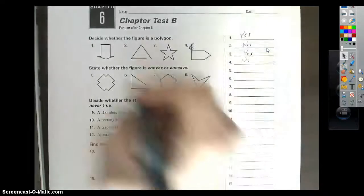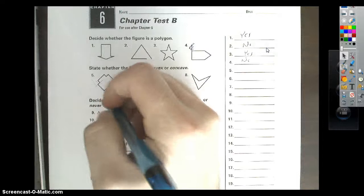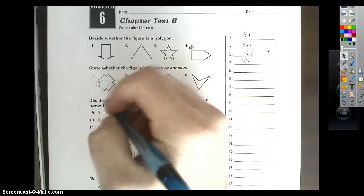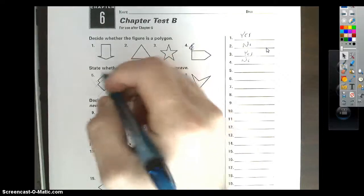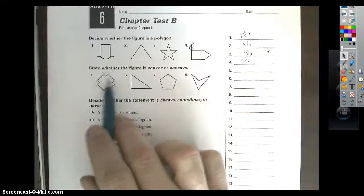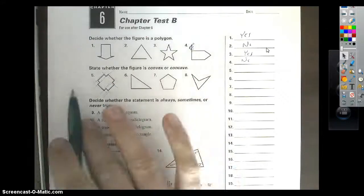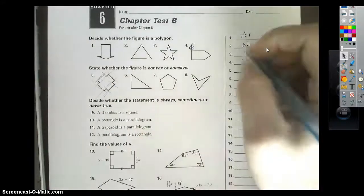So convex or concave, if you extend all of your sides out, meaning just extend lines out, if any of them go inward, it's concave, hence concave, like you're going into the cave.